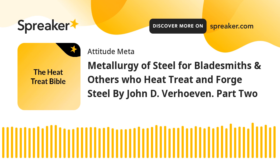The eutectoid temperature is traditionally called the A1 temperature. Steels that are 100% austenite must have temperature-composition coordinates within the central upper dark area of Fig. 3.3. The maximum amount of C that will dissolve into ferritic iron is only 0.02%, which occurs at the eutectoid temperature of 727°C (1340°F). This means that ferrite is essentially pure iron, as it is always 99.98% or purer with respect to C.